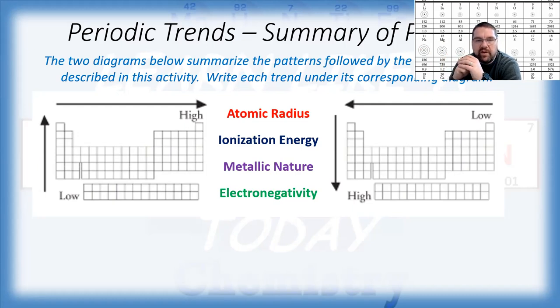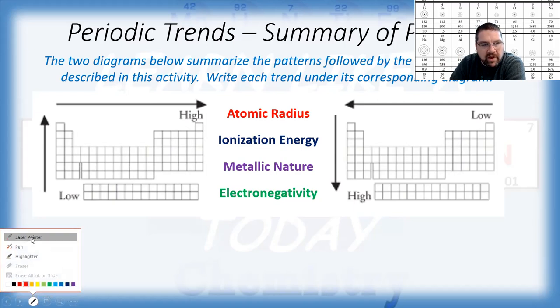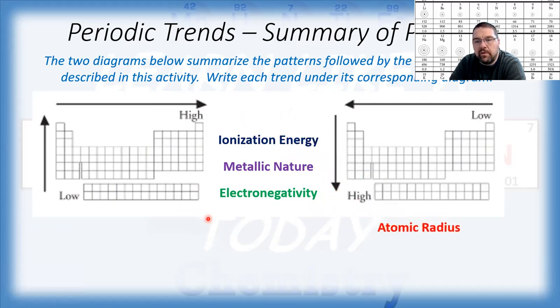So atomic radius. If we think about where were the highest values, where were the largest atoms, were they either in the upper right corner of the periodic table or were they in the lower left corner? If you recall from the trend in our discussion, we said that the lower you are on the table, the more electrons you've got and the more energy levels you need. The more levels you put on, the further out that distance of the valence shell from the nucleus is, so it's going to be a larger radius.